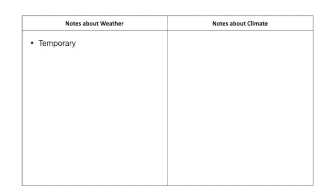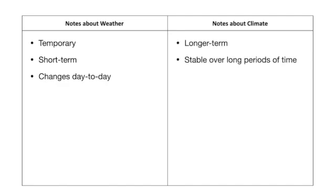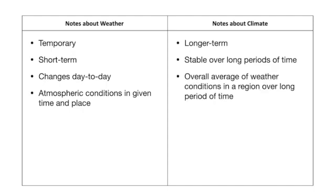To sum up: weather is temporary and short-term — it changes day to day — while climate is longer-term and more stable over decades and centuries. Weather consists of the atmospheric conditions in a given time and place, for example temperature, precipitation, wind, and barometric pressure. Climate, on the other hand, is made up of the overall average of weather conditions in a region over a long period of time, and is influenced by broader trends in global temperatures and atmospheric and oceanic currents.